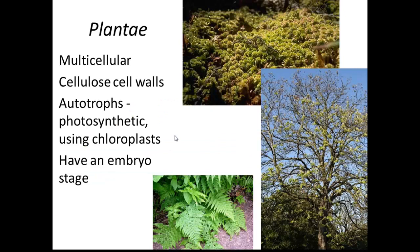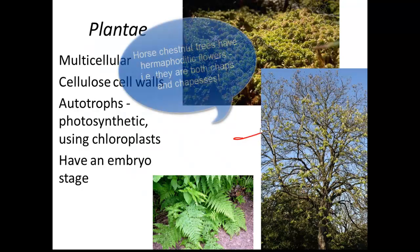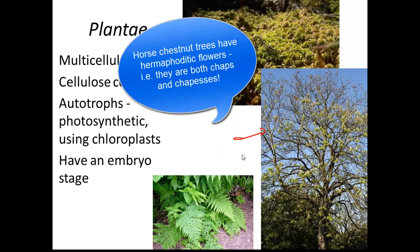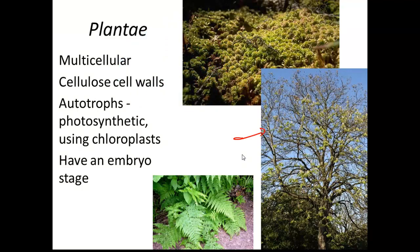Plants — Plantae — are multicellular, have cellulose cell walls, are autotrophs, photosynthetic using chloroplasts, and they have an embryo stage. When you see conkers on the ground in October, those conkers are the children of the plant — every seed contains an embryo. Types of plants include mosses, ferns such as bracken, and flowering plants such as the horse chestnut.